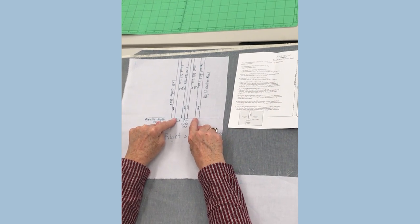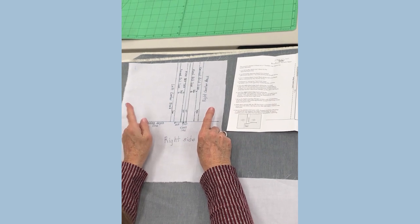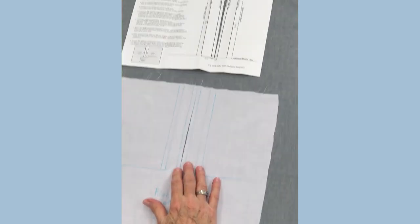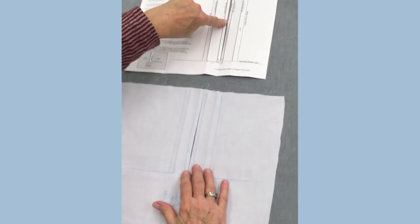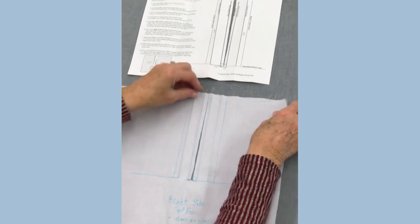After that, the last lines you draw are the ones that are 3/8 of an inch over from this last line that you drew, and then you're through drawing lines. The next step after you've done all the line marking is to slash on the center back line down to the opening depth line.